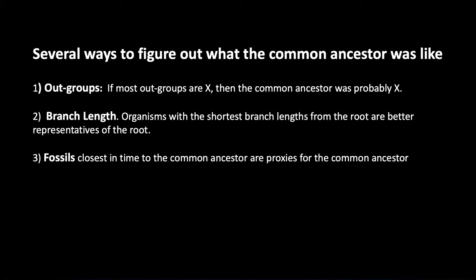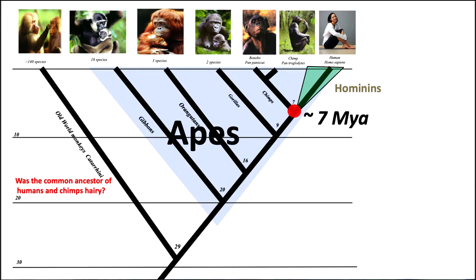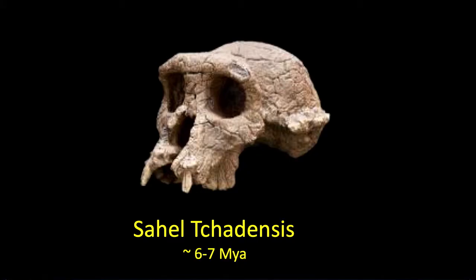So that was outgroups and branch length. What about fossils? Fossils closest in time to the common ancestor are proxies for the common ancestors. We were talking about the common ancestor of chimps and humans that lived about seven million years ago. When you go digging in Africa, you find fossils that are earlier and earlier. The fossil at six or seven million years ago — Sahelanthropus — becomes a proxy for what the common ancestor of chimps and humans might have been like, even if it's not necessarily on our lineage or the chimp lineage.